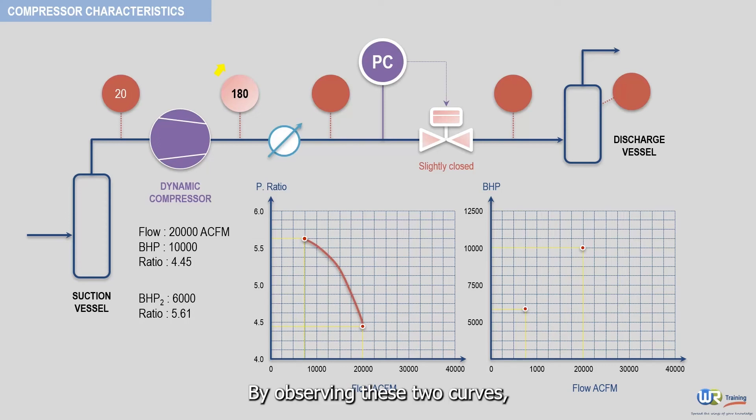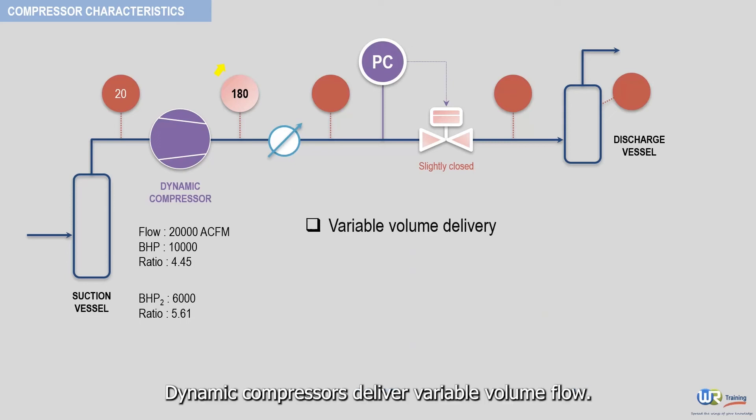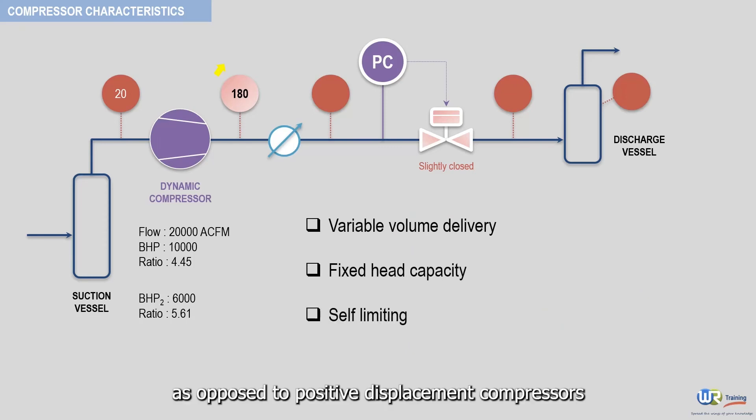By observing these two curves, the characteristics of any dynamic compressor become obvious. Dynamic compressors deliver variable volume flow, they have a fixed head capacity and are self-limiting, as opposed to positive displacement compressors.